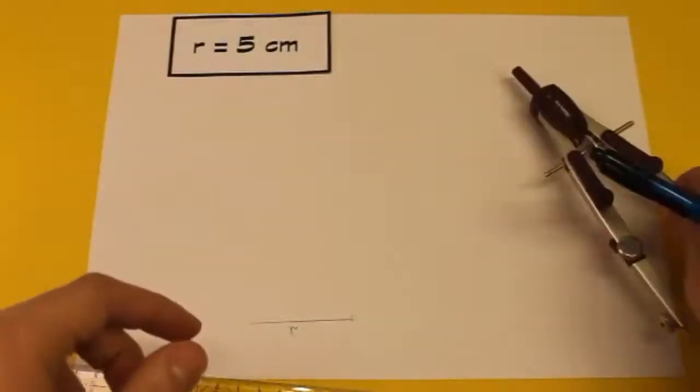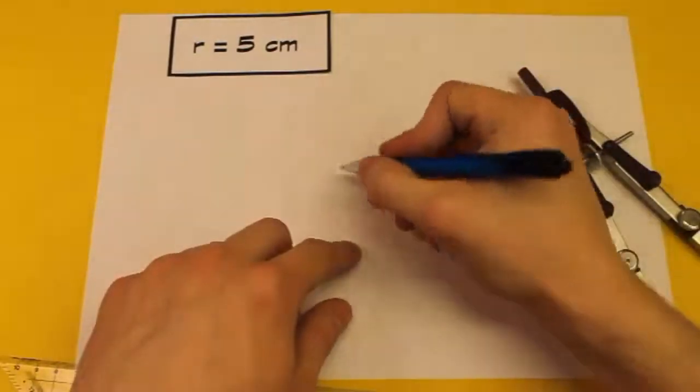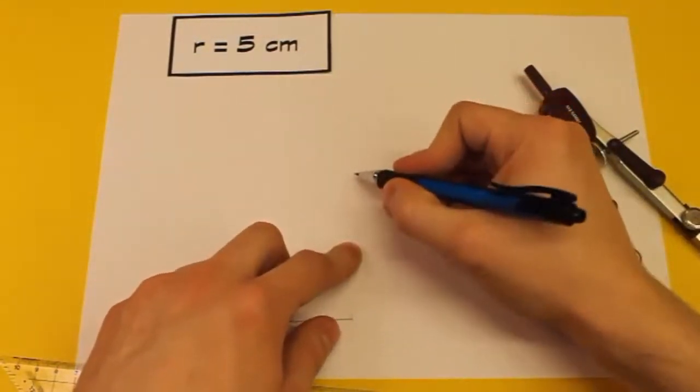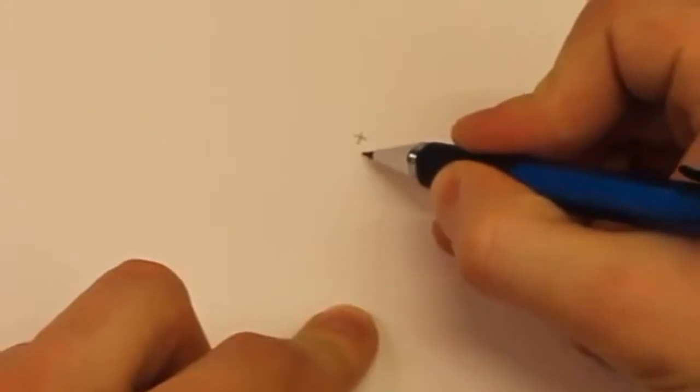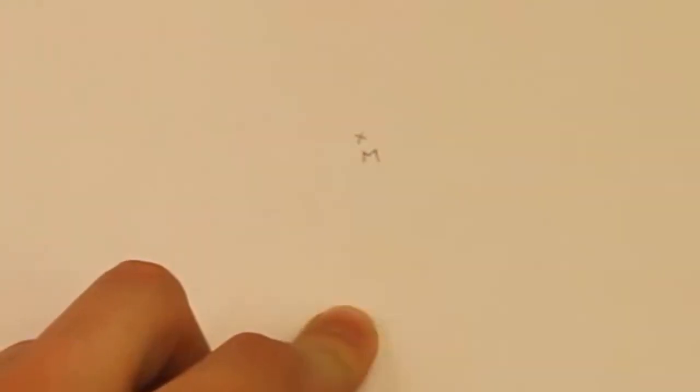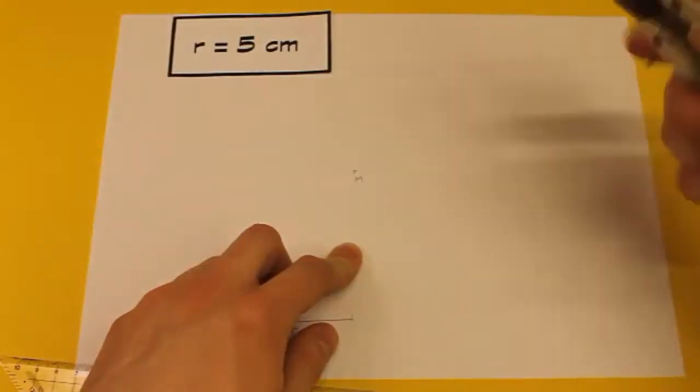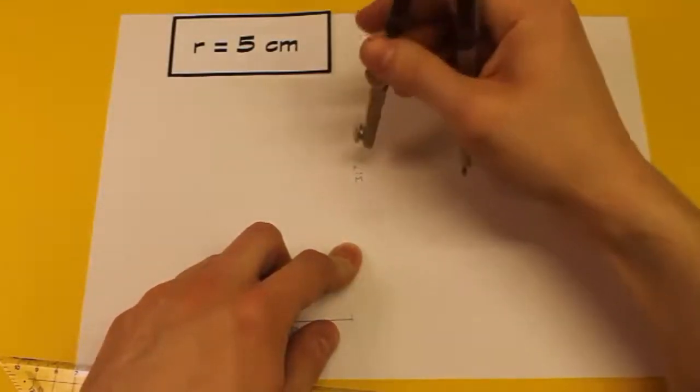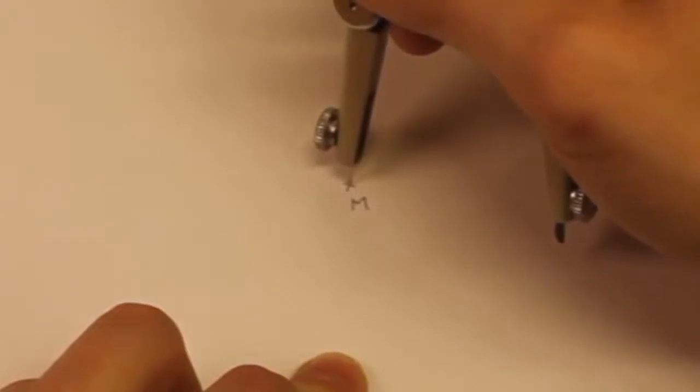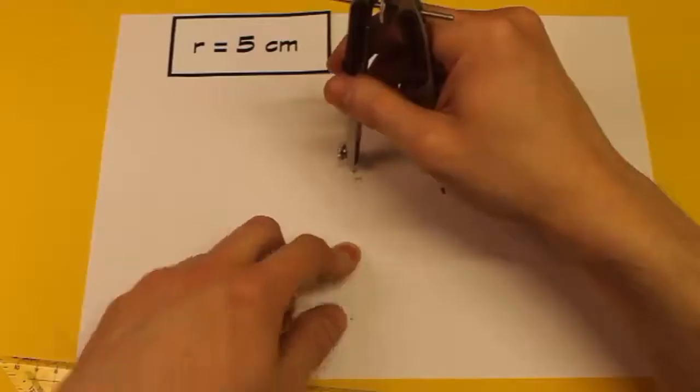Als nächstes müsst ihr jetzt einen Mittelpunkt einzeichnen, wenn noch keiner von der Angabe her vorgegeben ist. Also jetzt zeichnen wir einen Mittelpunkt ein, machen ein kleines Kreuzchen und beschriften diesen auch gleich mit einem großen M. Und jetzt nehmt ihr diesen eingestellten Zirkel, passt auf, dass ihr nichts mehr verstellt, und stecht mit der Nadel genau im Mittelpunkt ein.